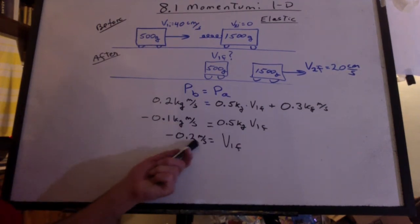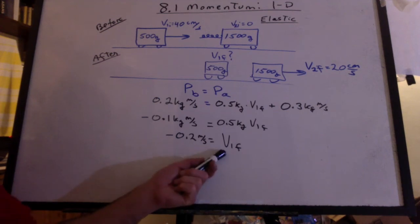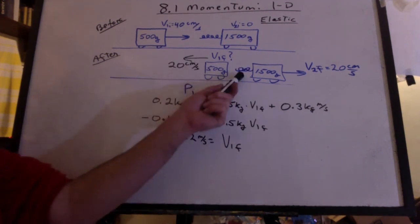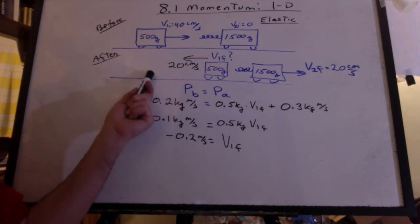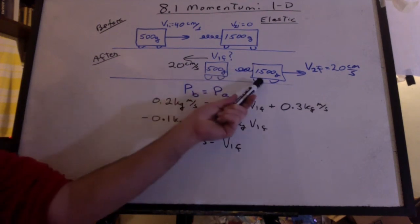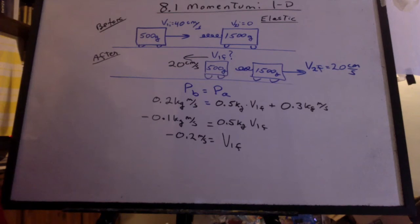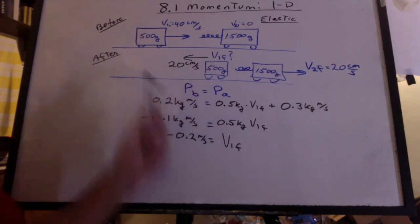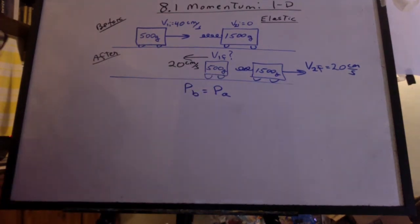Okay, we get a negative 0.2 meters per second for V1 final. This means it bounced off the spring and went backwards. Kind of makes sense, considering that this thing is very big, that's small, so I can picture this reversing direction. Not really sure.